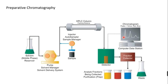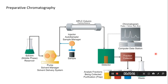The fraction collector is fully automated, working either by drop method or based on absorption. When absorption starts increasing, collection begins; when absorption returns to zero baseline, collection stops and remaining liquid goes to waste. The second peak is collected as a separate fraction based on absorption detection (delta A). This is the mechanism of preparative chromatography.